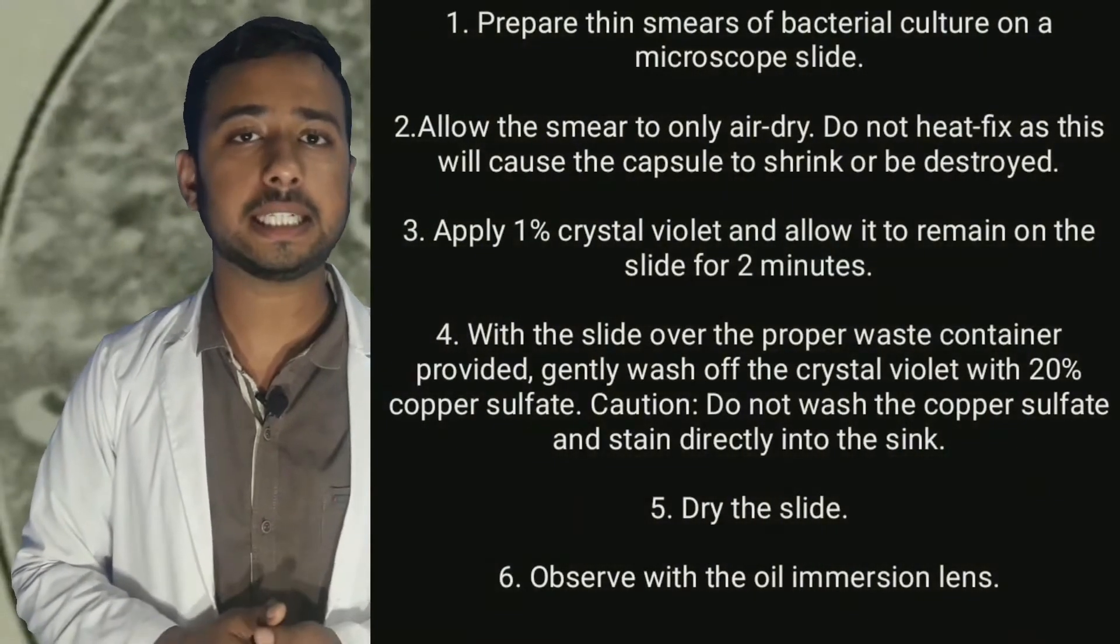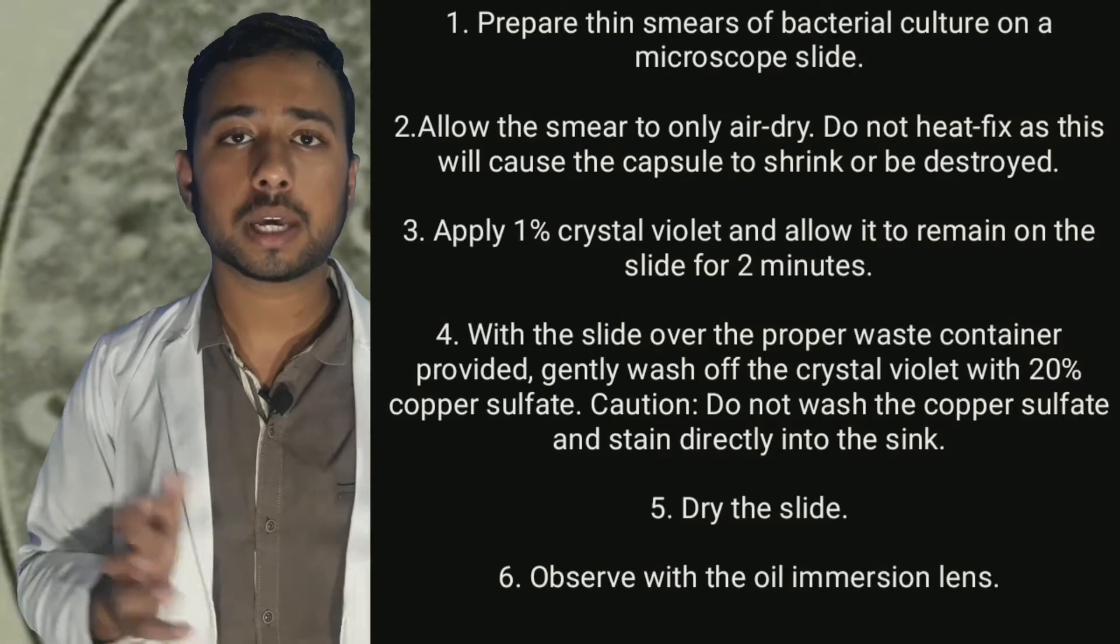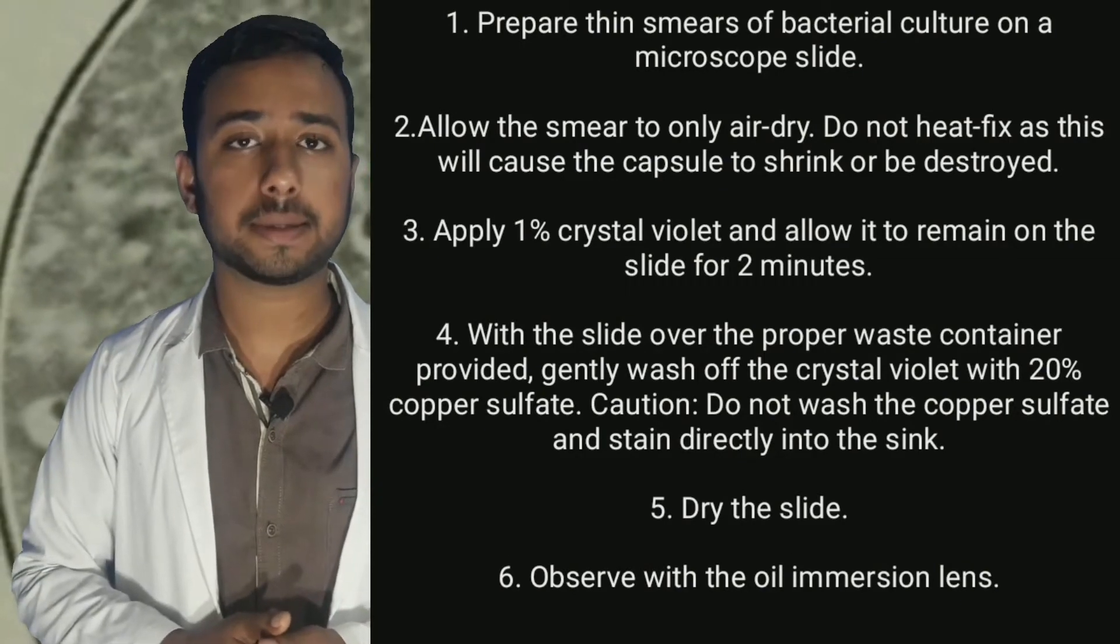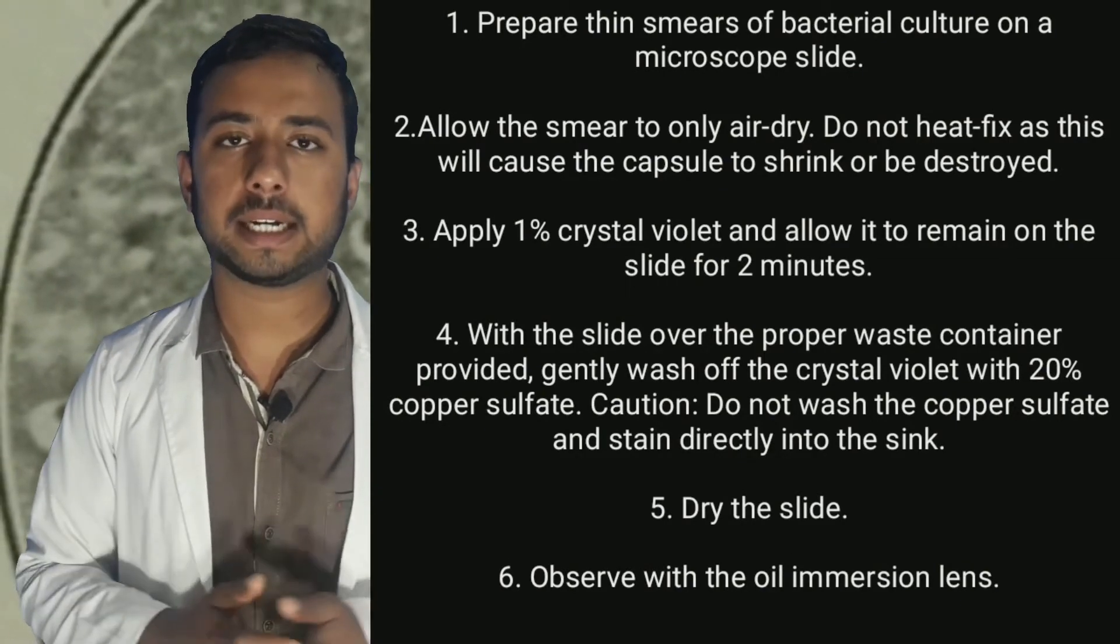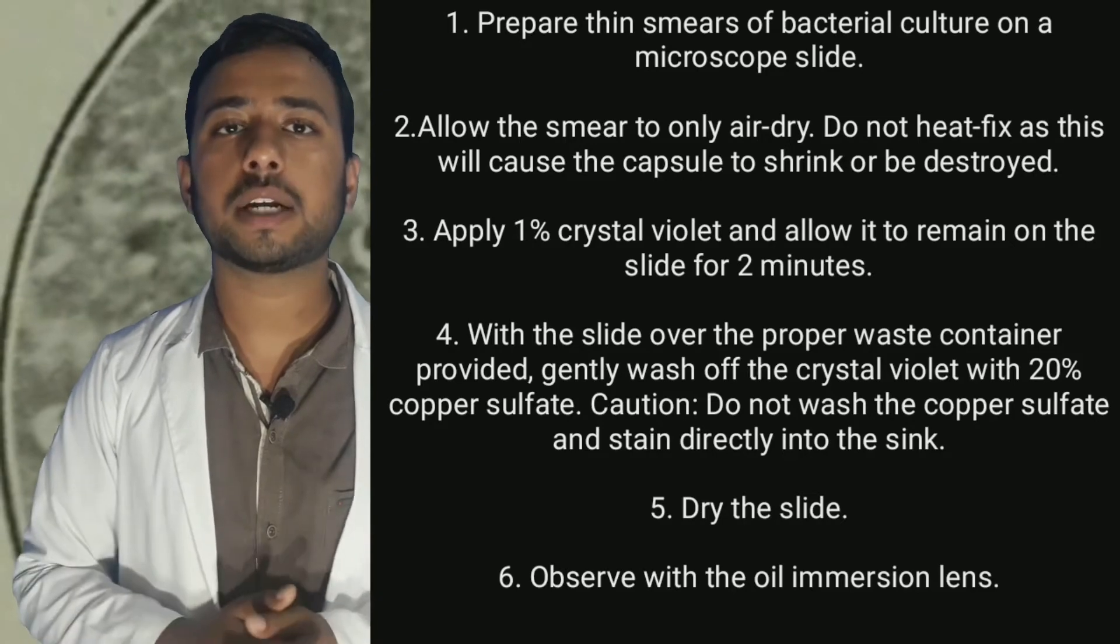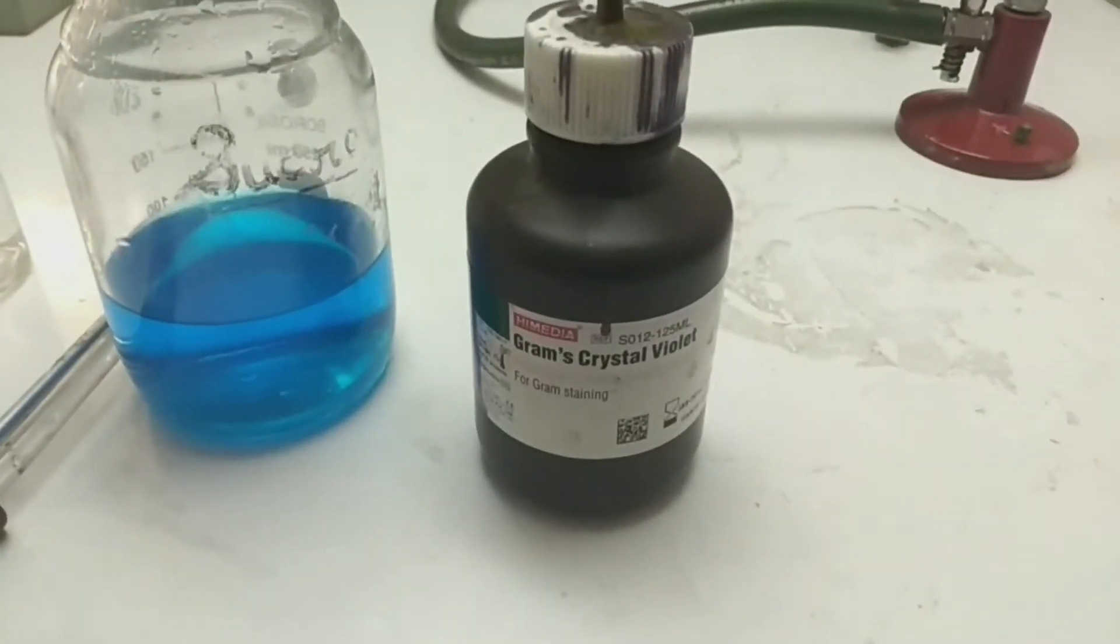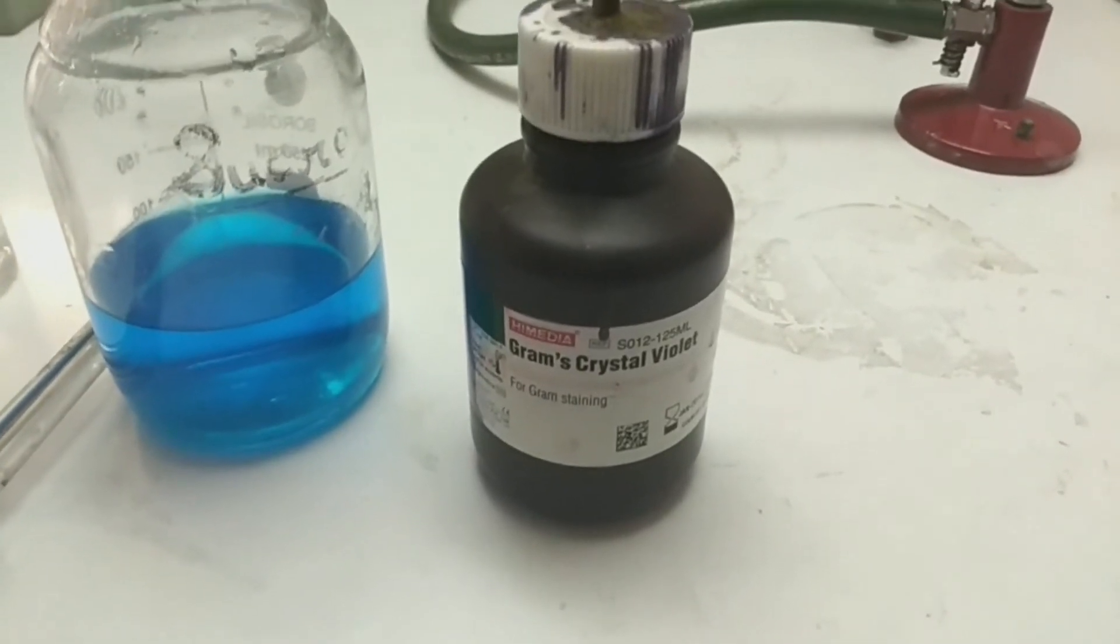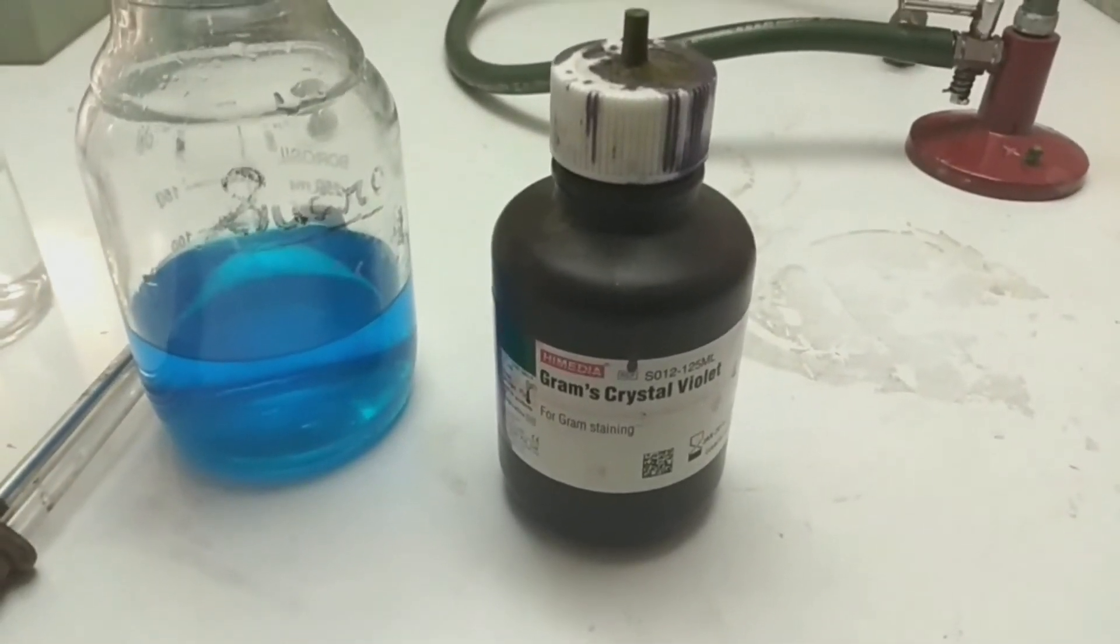Now the steps of capsule staining are as follows. As you can see on your screen, you can also take a screenshot so that it becomes easier for you to practice it. For Anthony's method of capsule staining, we require gram crystal violet as a stain.